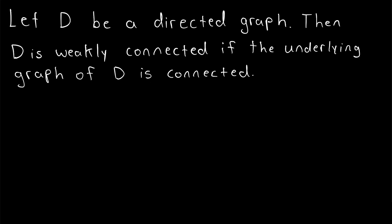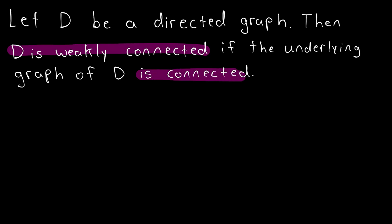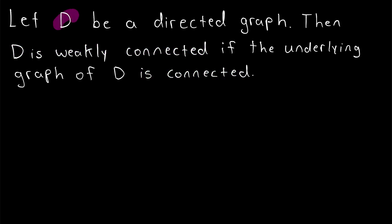I hope this video helped you understand the definition of weakly connected directed graphs. We'll recap it one more time. Let D be a directed graph. Then D is weakly connected if the underlying graph of D — created by removing the direction from the edges of D — is connected. If the underlying graph is connected, then we call the directed graph weakly connected. And we say a directed graph is disconnected if it is not weakly connected.